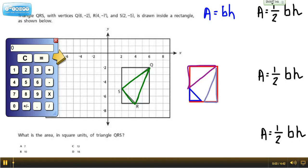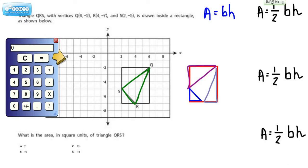Hey everybody, Ms. Dietrich here. We're taking a look at a pretty complex question. Triangle QRS with the following vertices Q, R, and S plotted on this coordinate plane is drawn inside a rectangle as shown below. What is the area in square units of triangle QRS? So that's the green triangle. We have to find the area.